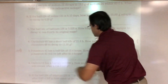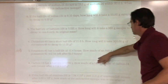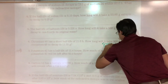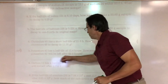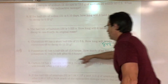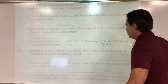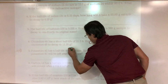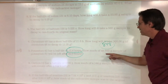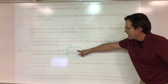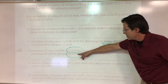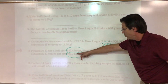Number seven: potassium-42 has a half-life of 12.4 hours. How much of an 848-gram sample will be left after 62 hours? It's giving me the half-life and total time, so divide 12.4 into 62 to find how many half-lives occurred.